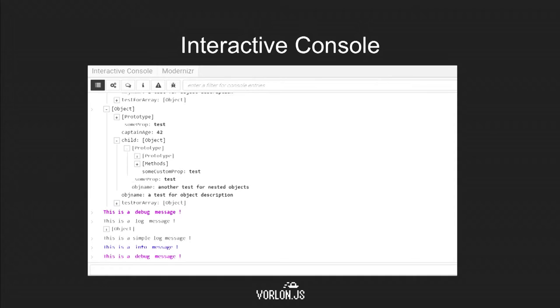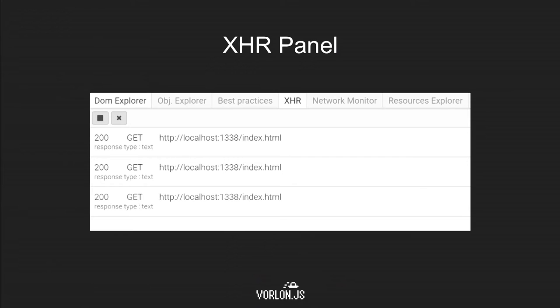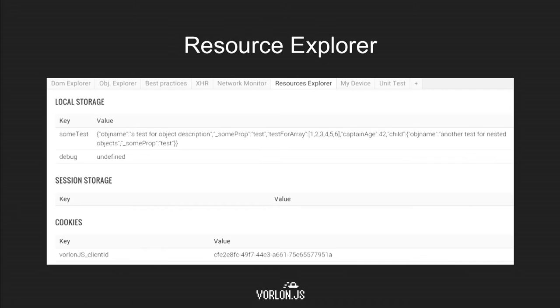And then you have access to a lot of different features. The first one is the interactive console that you're really used to in F12. You have a bottom field in which you can type some JavaScript code, and it's going to be run on the clients through the network. You have access to an Ajax panel also, and the resource explorer, which is showing you everything on the device through the internet.